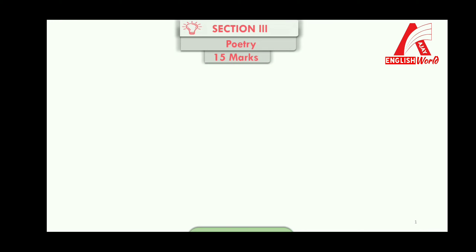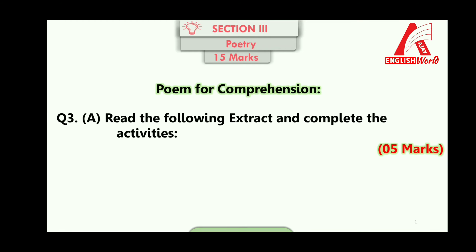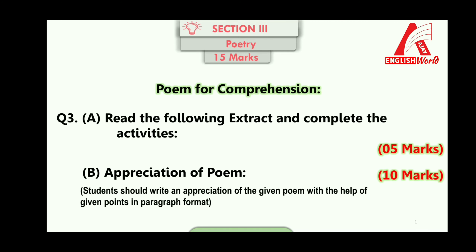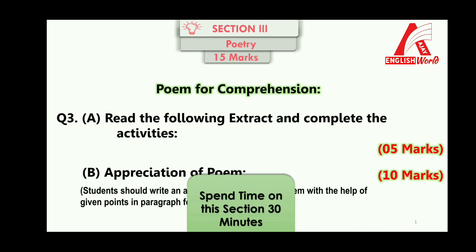Section number three — poetry — is for 15 marks. Under this section your comprehension skill for a poem is tested. Question number three falls under this section and has two parts: question three A and question three B, both from the poetry in the textbook. Question three A is for comprehension having three activities carrying 5 marks in all. Question three B is for appreciation of a poem for 10 marks. Both carry a total of 15 marks. You should give 30 minutes for this section.